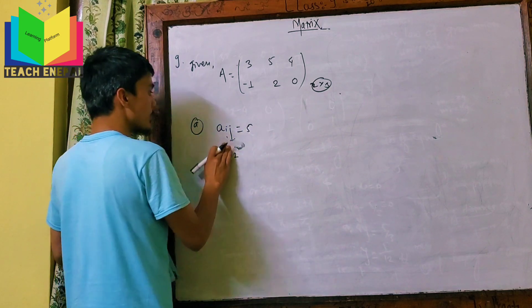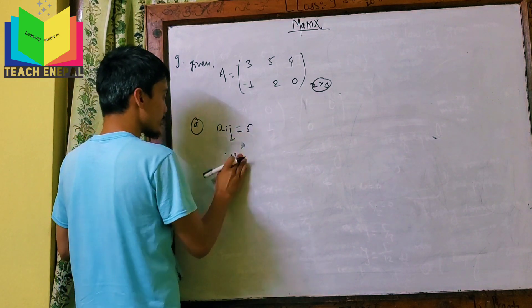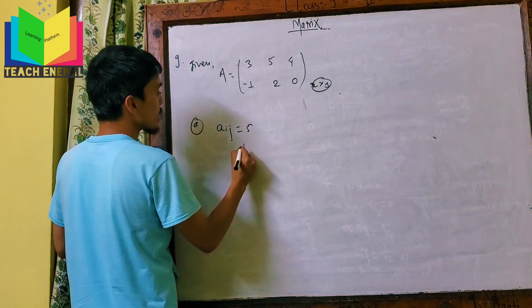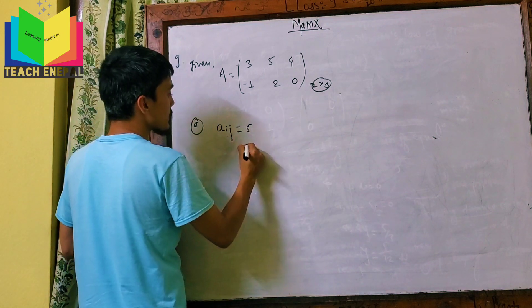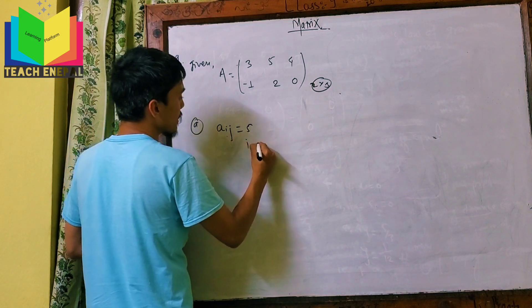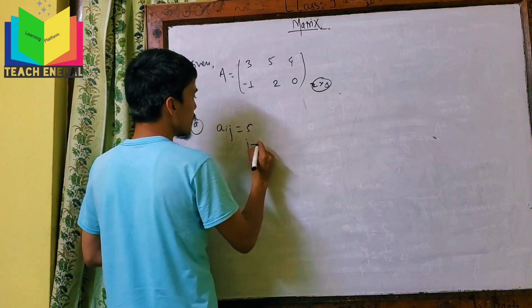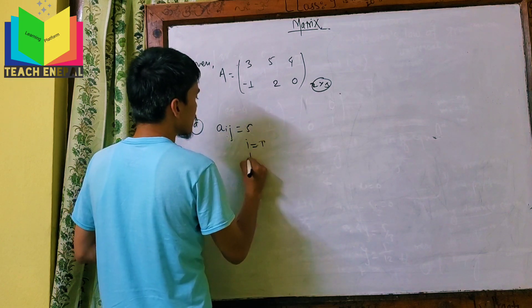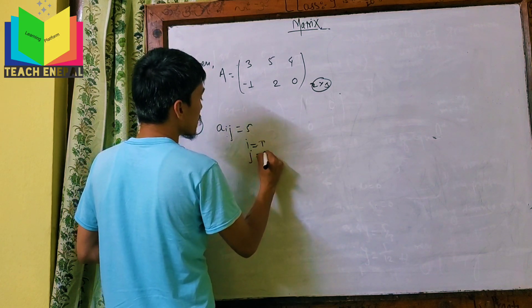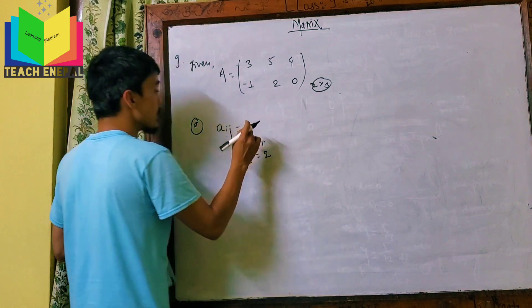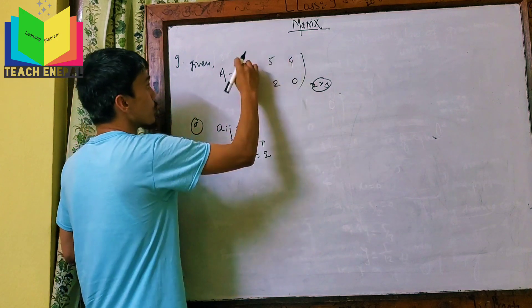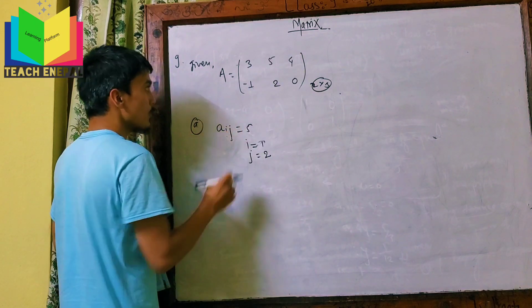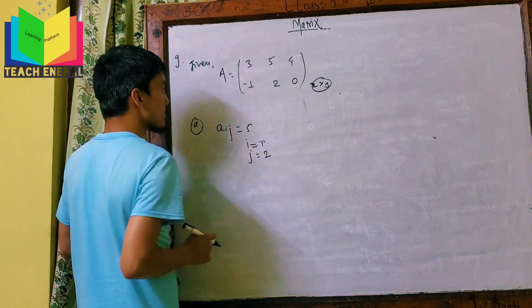So we can confirm: i is equal to 1 and j is equal to 2. Therefore a-ij equals 5 at the first row, second column.